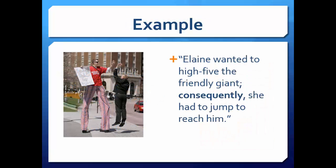The third example — "Elaine wants to high-five the friendly giant; consequently, she had to jump to reach him" — utilizes a semicolon and a conjunctive adverb, "consequently," to join the two independent clauses. Remember that independent clauses should be able to stand alone and contain a subject, verb, and a direct object or noun.